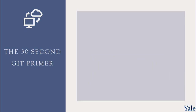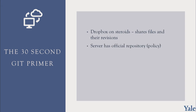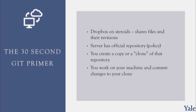Let me give you a short primer on Git for those of you not familiar with it. You can think of Git as something like Dropbox on steroids — it allows you to share files and their revisions, go back and have different versions, merge versions, and all those good things. The server has the official repository, at least as a matter of policy. You create a clone of that repository, work on your machine and make changes, commit them to your clone, and then synchronize your clone with the server.